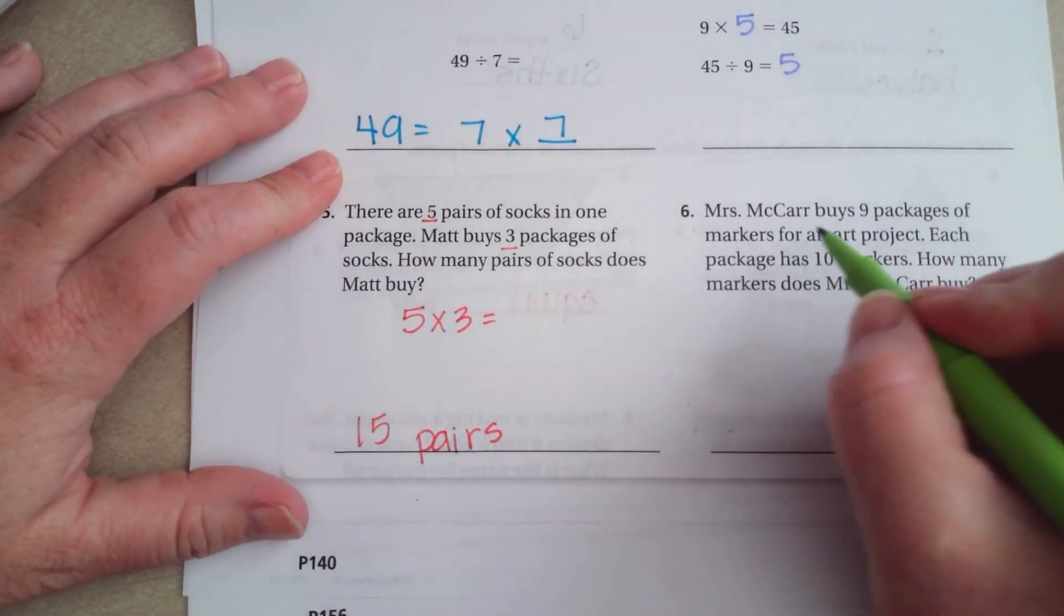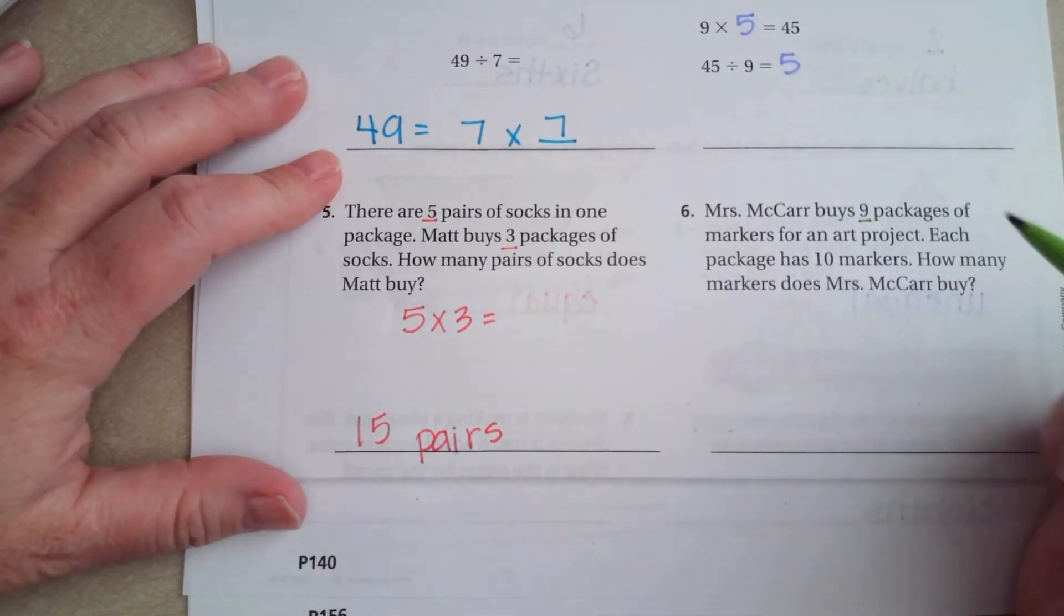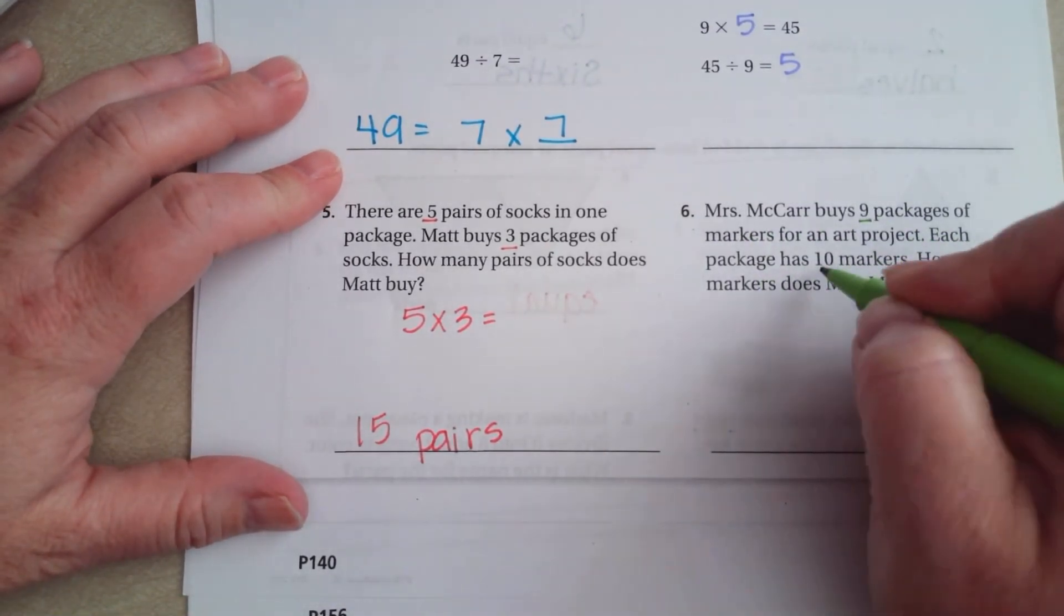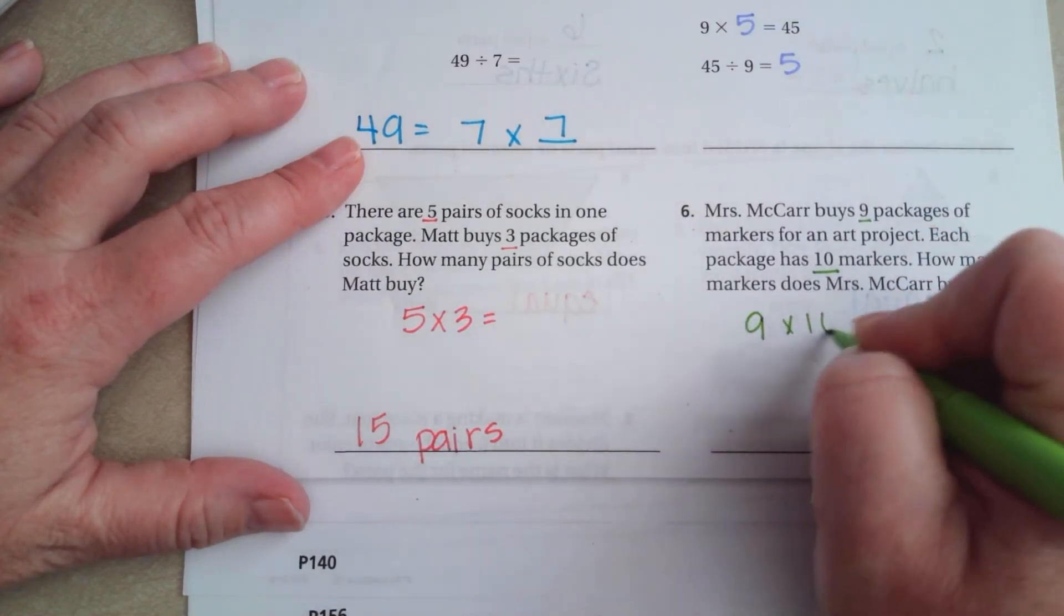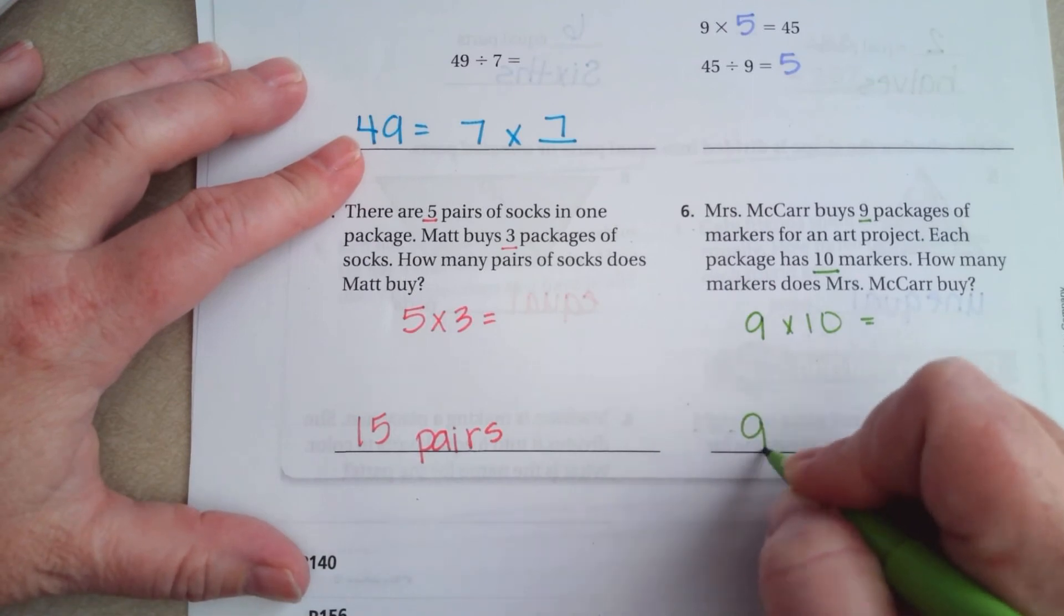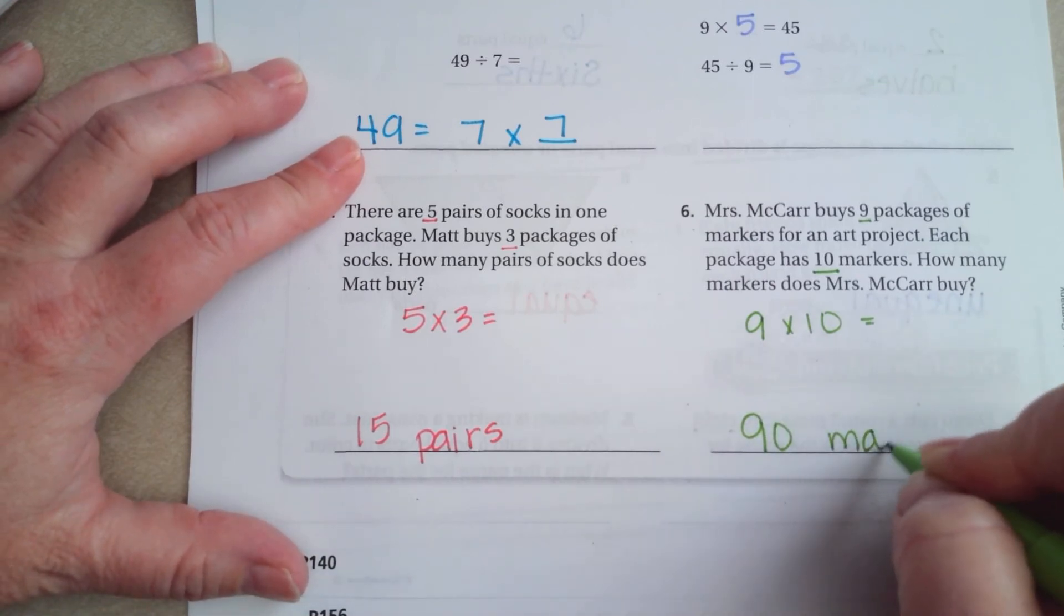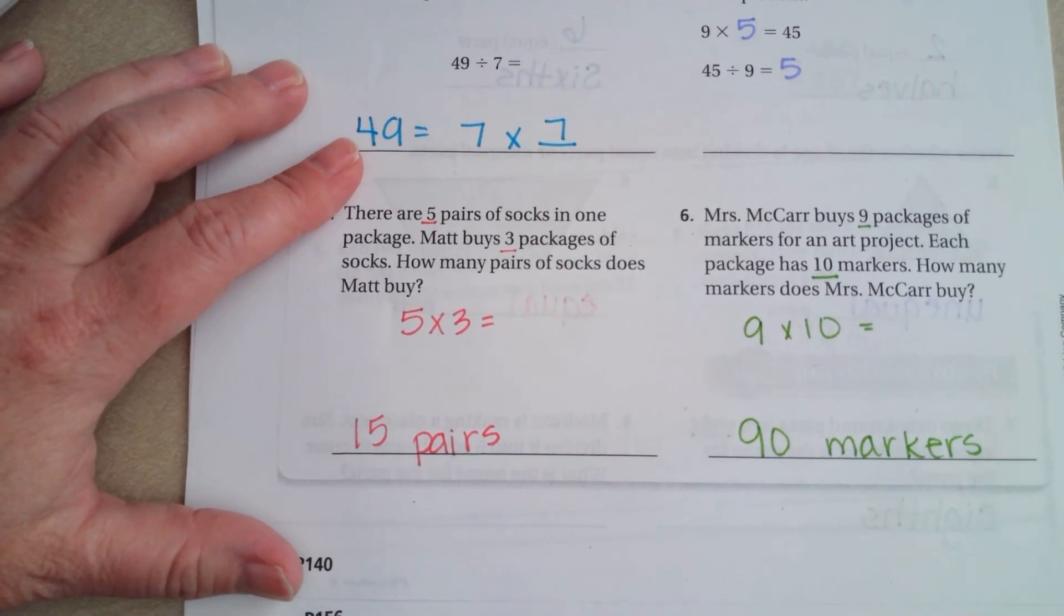And, Mrs. McCarr buys nine packs of markers for an art project. Each pack has ten markers. How many markers does she buy? Well, nine times ten. Well, that's 90 markers.